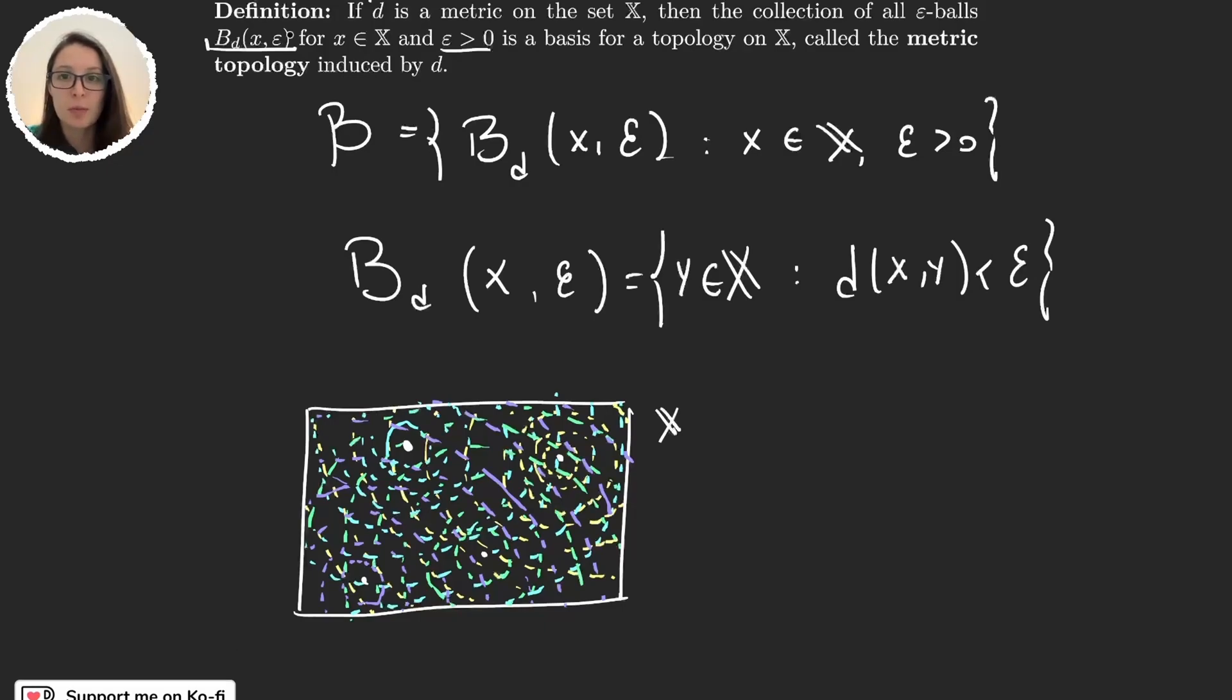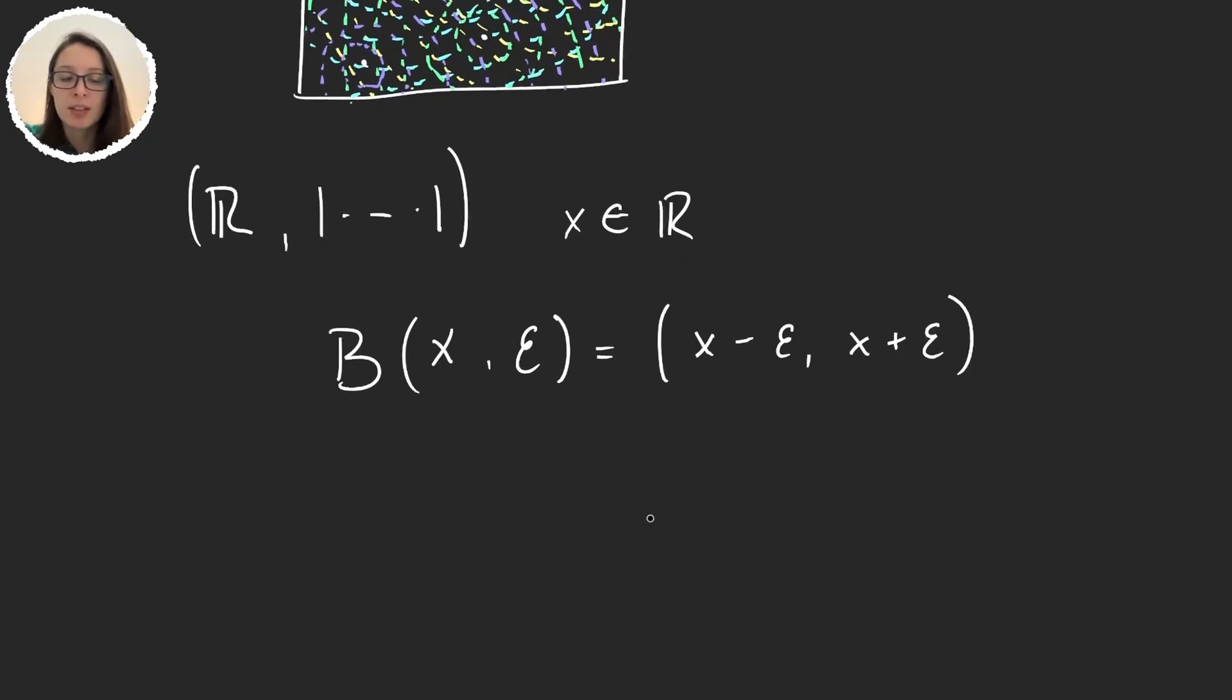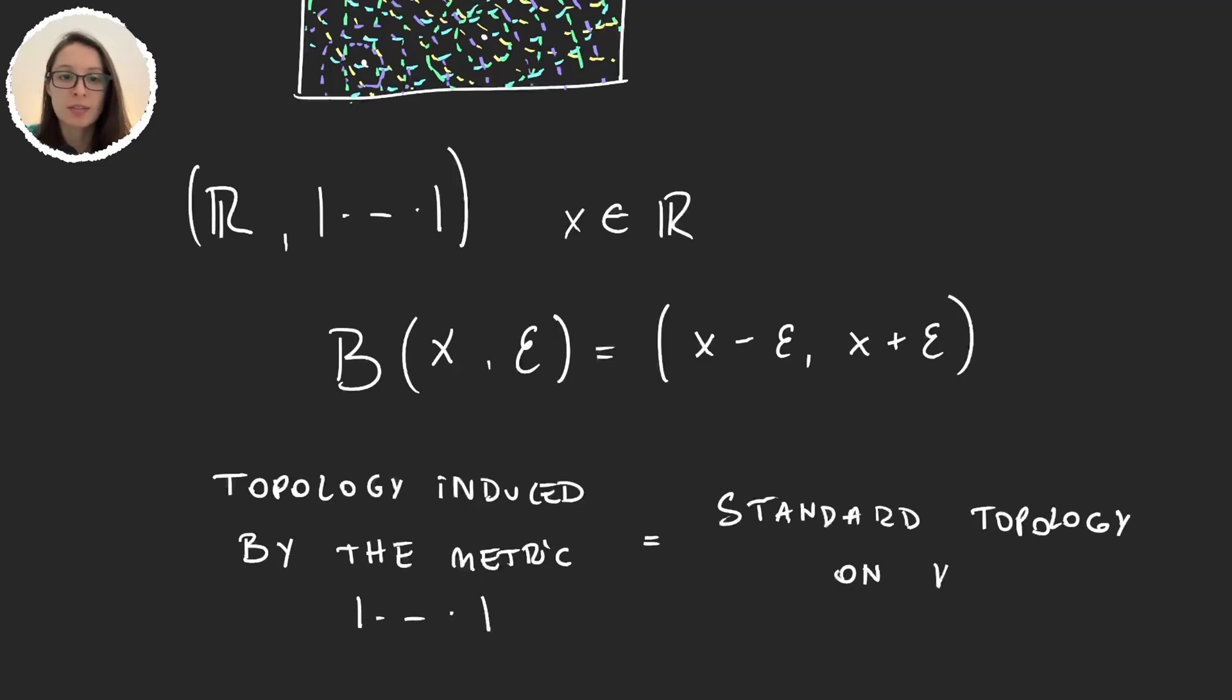So now let's see a few properties. We can for example take the real numbers with the usual metric. So let's think what the balls look like in this space. We have given some x in X. In the real numbers, we will consider the ball with center in x and some radius epsilon. We know that these sets are (x minus epsilon, x plus epsilon). This is just an open interval. And so it's very simple to see that the topology induced by the usual metric in the real line is the same as the standard topology of the line.